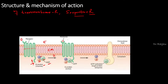Now whenever a ligand comes and binds to the extracellular domain of the G-protein coupled receptor — so the first point is binding of the ligand to the extracellular domain of the G-protein coupled receptor — that is going to cause some conformational change in the receptor. And this conformational change is the second point. Now what is going to occur once there is a conformational change: the GDP which is attached to the alpha subunit of the G-protein gets converted into GTP.